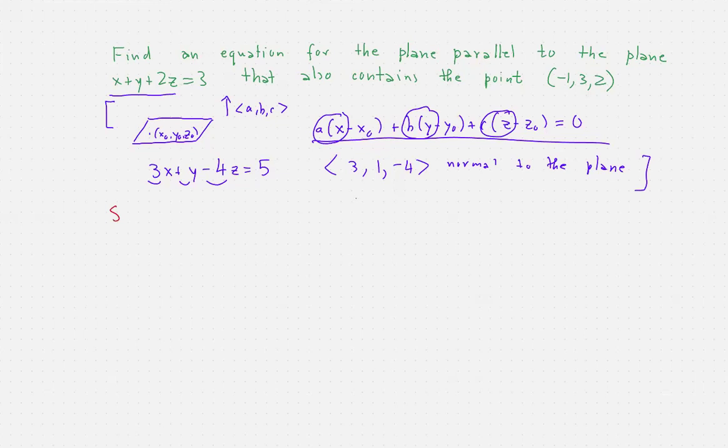So we start by noticing that the plane x plus y plus 2z has normal vector, a normal vector. The normal vector is not unique, any non-zero scalar multiple of a normal vector is also a normal vector. But in this case, we have 1, 1, 2.